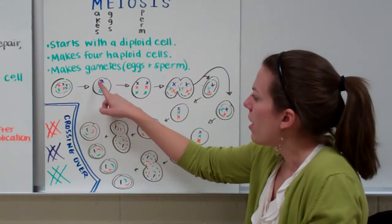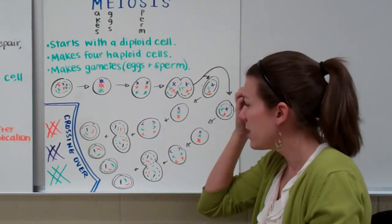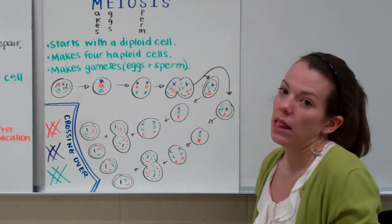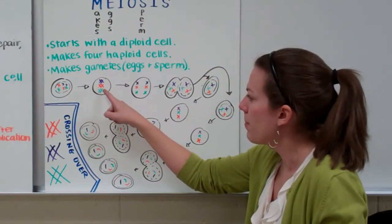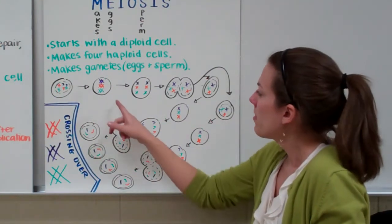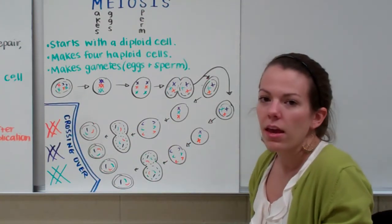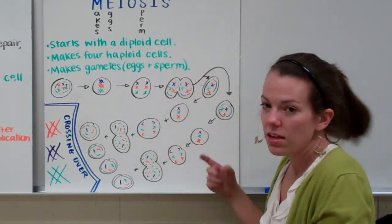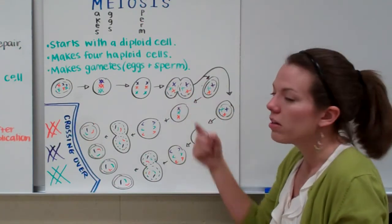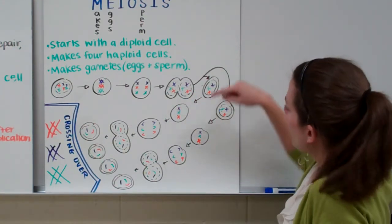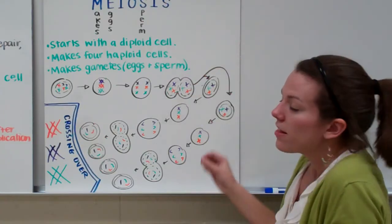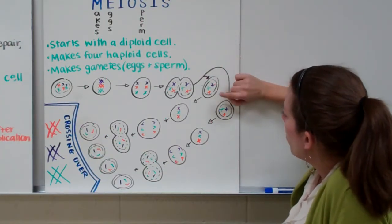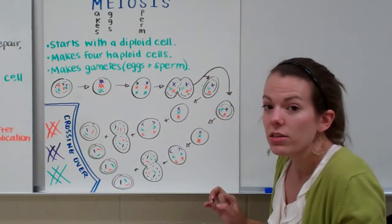The next step is that our chromosomes line up across from one another — purple across from purple, orange from orange, green from green. We call these pairs of chromosomes homologous chromosomes. Our homologous pairs line up across from one another in a double file line. Then our chromosomes move apart — that's anaphase. Then our cell begins to pinch apart — telophase — and we form a new nucleus around each set of chromosomes. We end up with two cells, each having only one purple, one green, and one orange chromosome. These are now haploid cells.